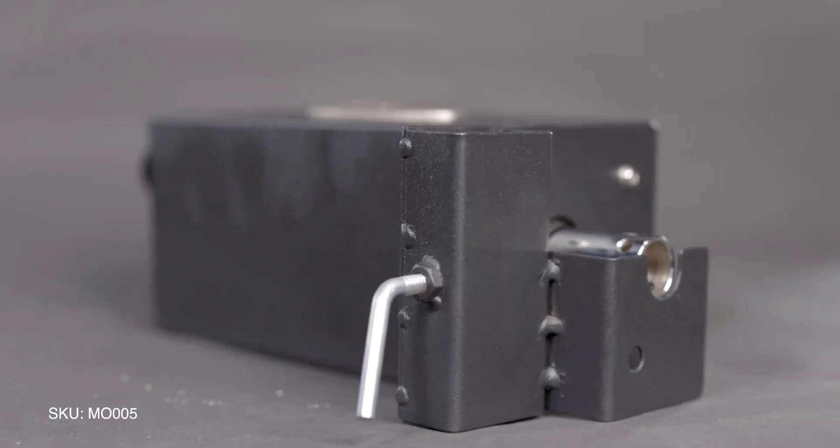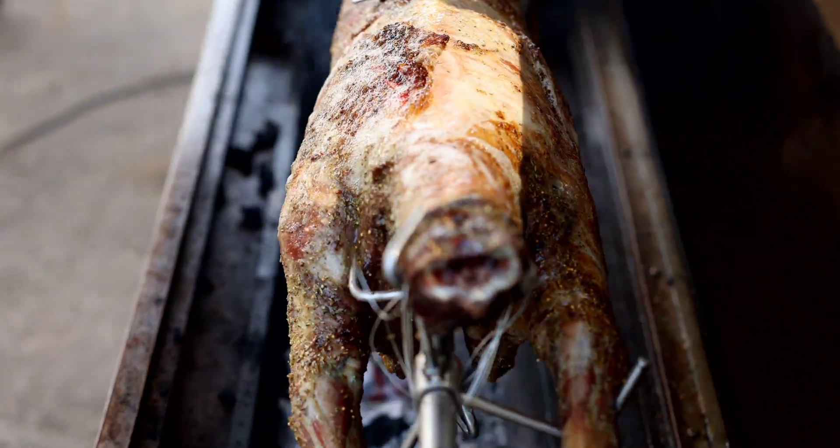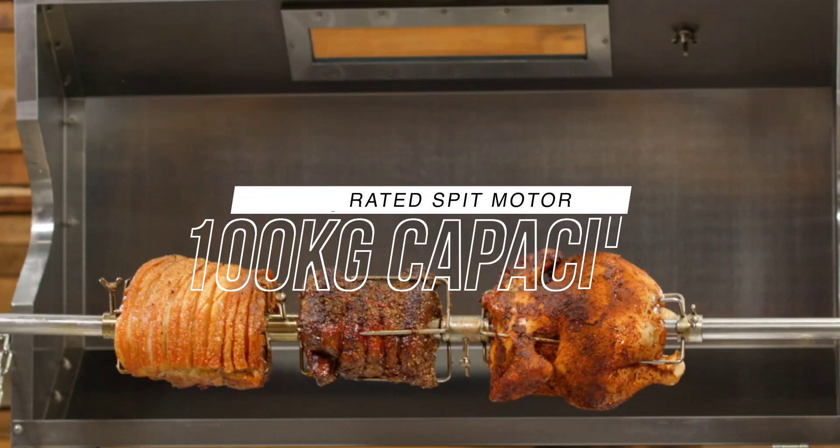Introducing the Flaming Coals M0005 Heavy Duty Rotisserie Motor, an Australian designed rotisserie motor suitable for rotating 100 kilograms of meat.